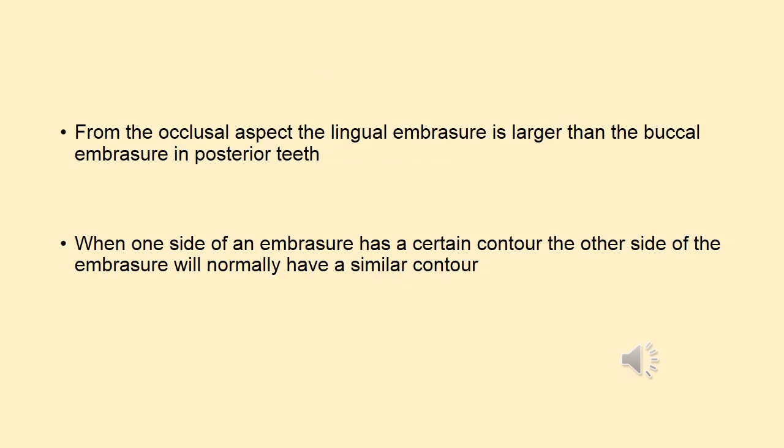The fourth rule for embrasures is from the occlusal aspect, the lingual embrasure is going to be larger than the buccal embrasure in the posterior teeth. The reason is because in the posterior teeth, the contact area is going to be more buccally placed. As a result, the buccal embrasures are going to be smaller in size and the lingual embrasures are going to be larger in size.